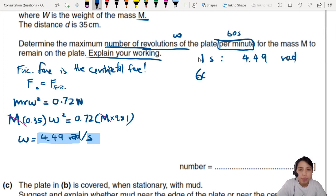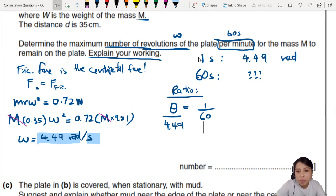In one minute, how many times has this thing gone round? This is radians per second, we want revolutions per minute. The idea is in one second you can rotate 4.49 radians. In one minute, that's 60 seconds. Let's do some ratio.